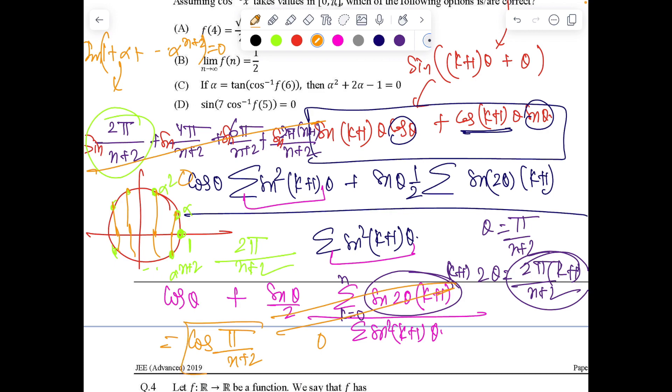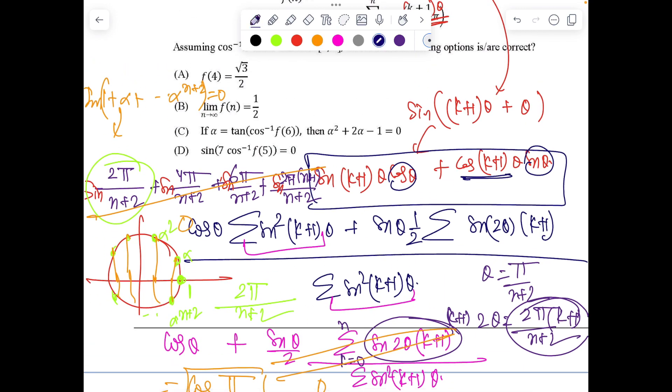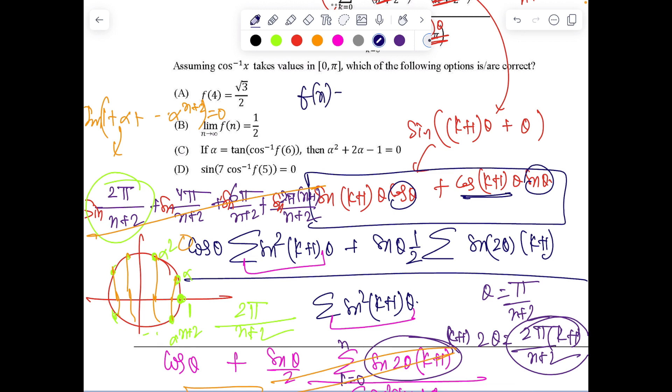And theta, according to my convention, was pi by n plus 2. So I hope you enjoyed the method. Now once we know fn, rest is obvious. So fn, we got as cos of pi by n plus 2. So limit n tends to infinity. It's definitely cos 0. It's going to be 1. So second option is wrong. f4 we can calculate. And that's giving root 3 by 2. So that's correct.